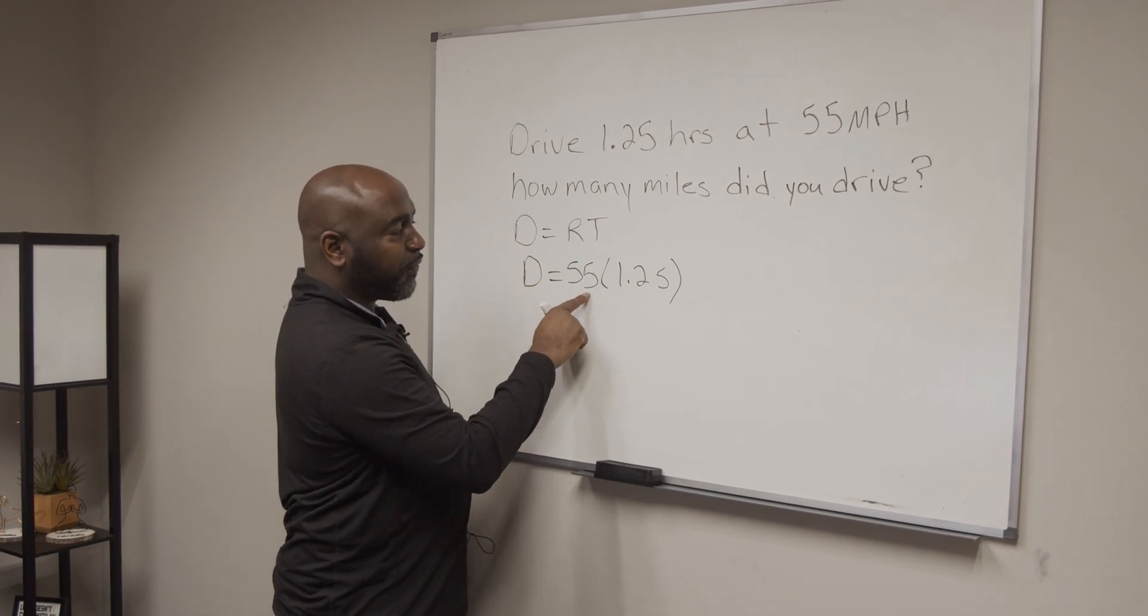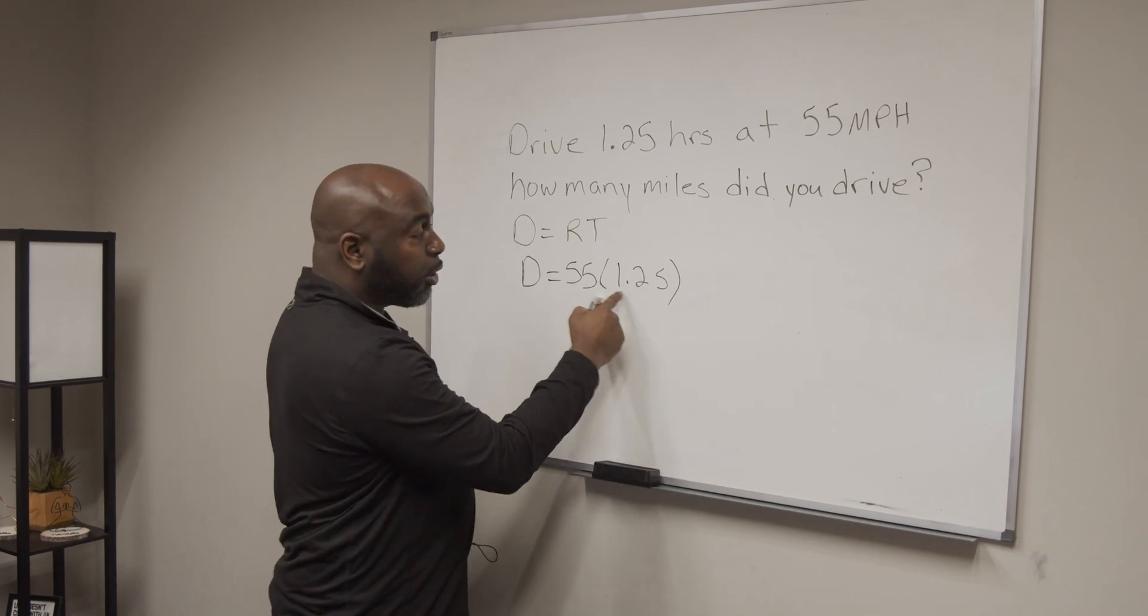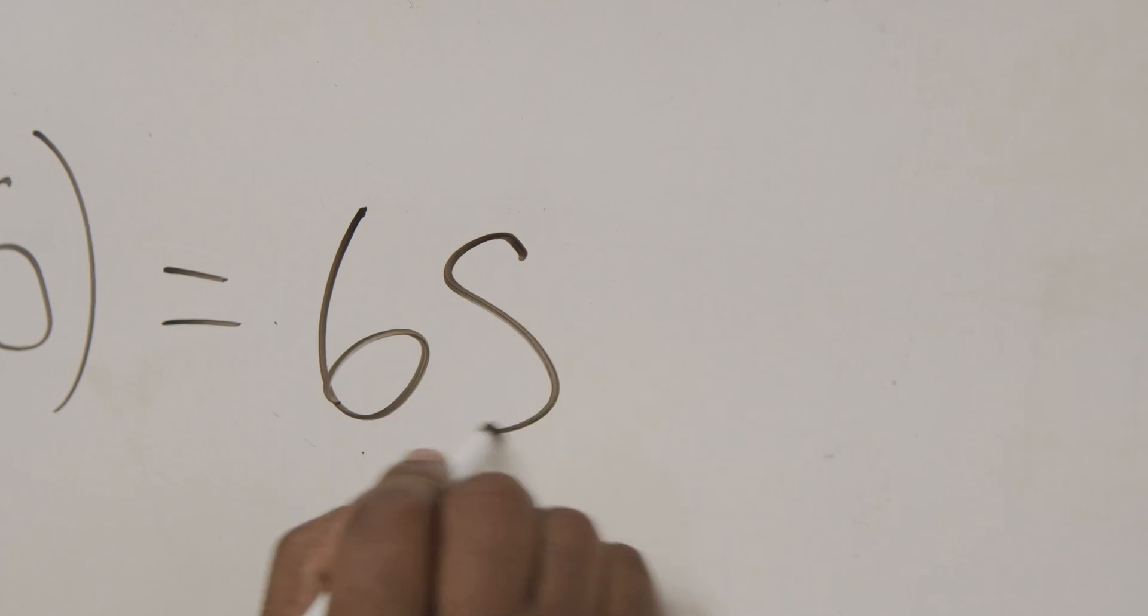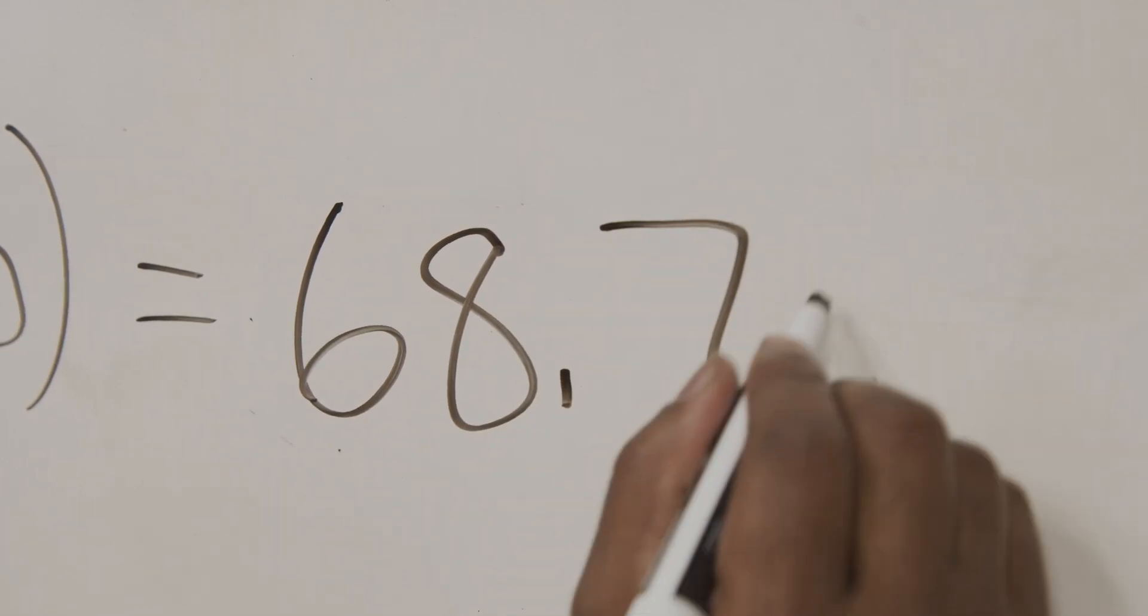So when we have 55 times 1.25, or multiplied by 1.25, that equals 68.75 miles for that day.